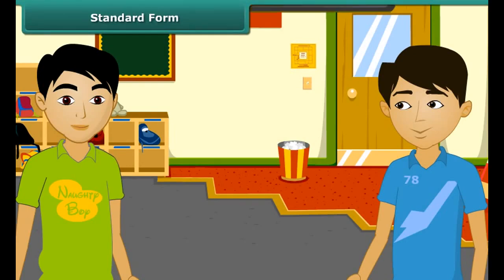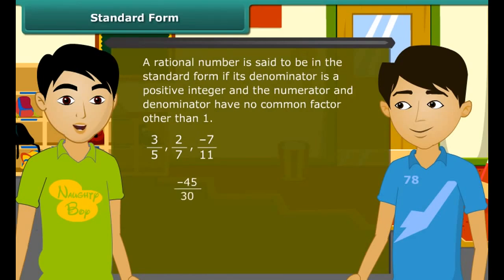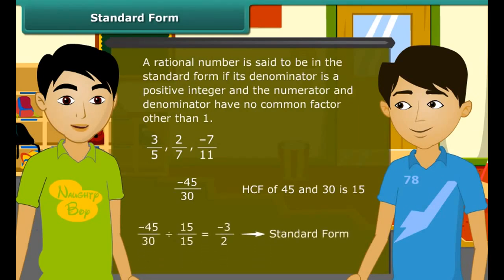A rational number is said to be in the standard form if its denominator is a positive integer and the numerator and denominator have no common factor other than 1. These rational numbers are in the standard form because their numerator and denominator have no common factor other than 1. If the numbers are not in the standard form, they are reduced. For example, minus 45 by 30 is not in standard form. We reduce it by dividing the numerator and denominator by their HCF. Here the HCF of 45 and 30 is 15, so we divide by 15 and get minus 3 by 2, which is in standard form.